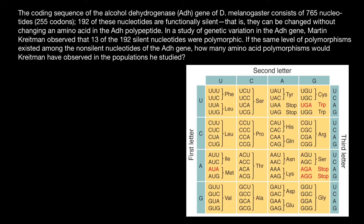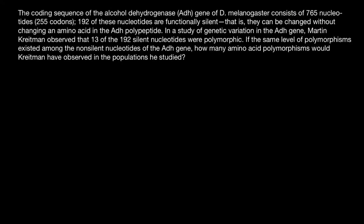A change in the first or second position will, in 100% of cases, also change the amino acid. But a change in the last position — the third position — in many cases does not change the amino acid specified by the codon. However, sometimes a change in the third position does change the amino acid, as you can see here where the third position differs and specifies a different amino acid. Now let's return to our problem: 765 nucleotides, 255 codons, and 255 codons specify 255 amino acids.